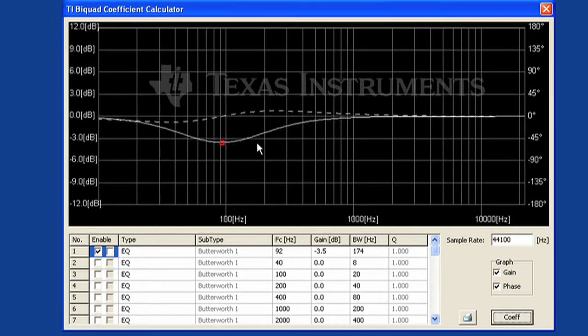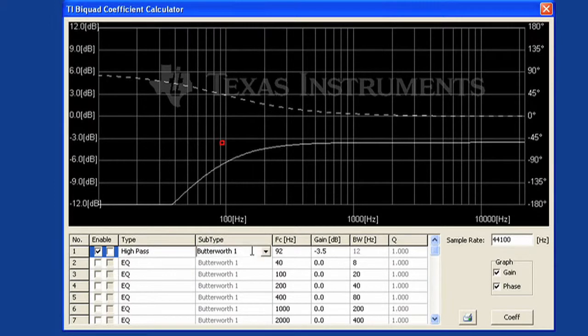Each filter supports several different types and subtypes, which you can select from a list, for example a high-pass filter of subtype Bessel 2.